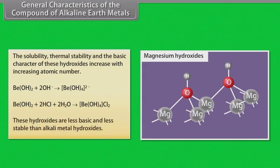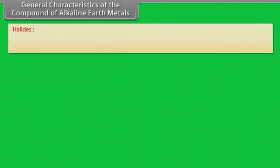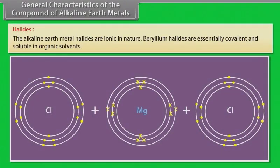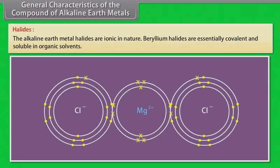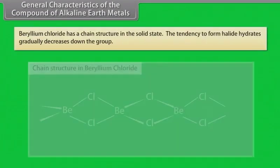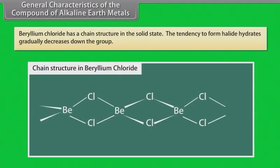These hydroxides are less basic and less stable than alkali metal hydroxides. Halides: The alkaline earth metal halides are ionic in nature. Beryllium halides are essentially covalent and soluble in organic solvents. Beryllium chloride has a chain structure in the solid state. The tendency to form halide hydrates gradually decreases down the group.